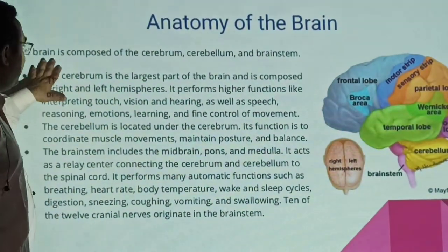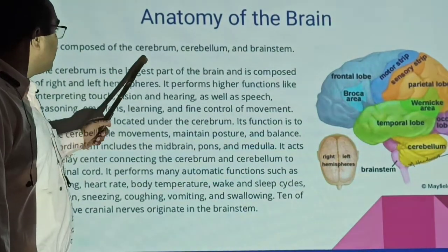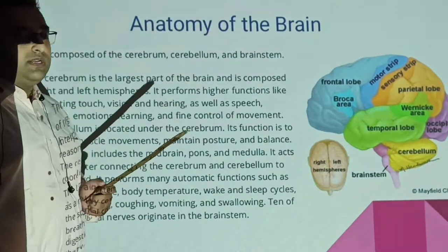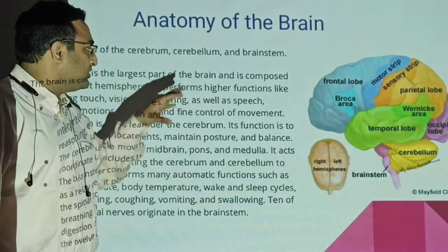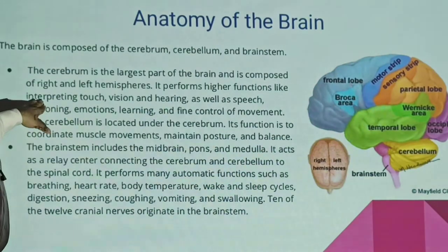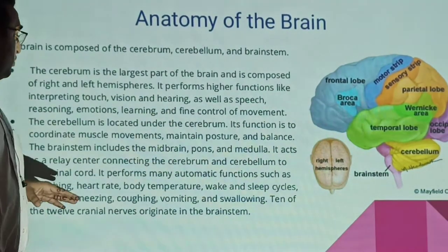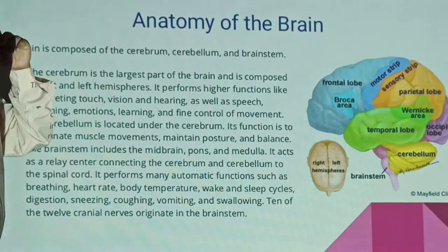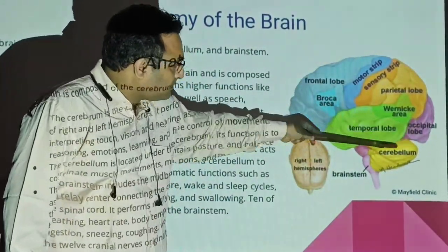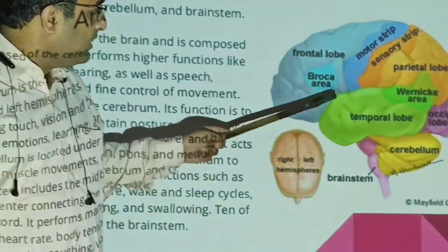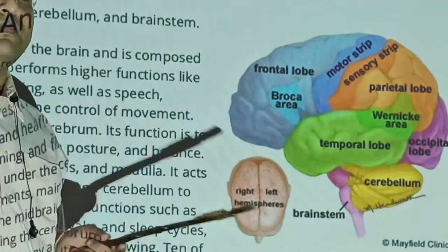The brain is composed of three main components: cerebrum, cerebellum, and brainstem. The cerebrum is the largest part of the brain, divided into right and left hemispheres, responsible for maximum functions. The next part is the cerebellum, and the third part is the brainstem. So these three parts make up the brain.